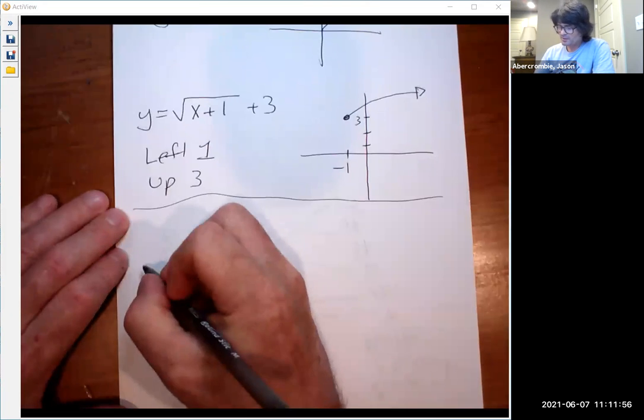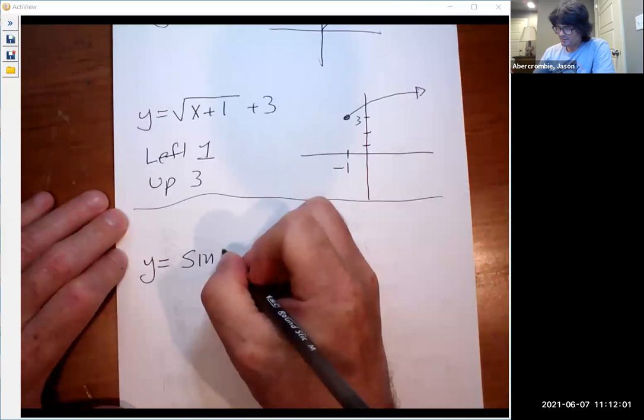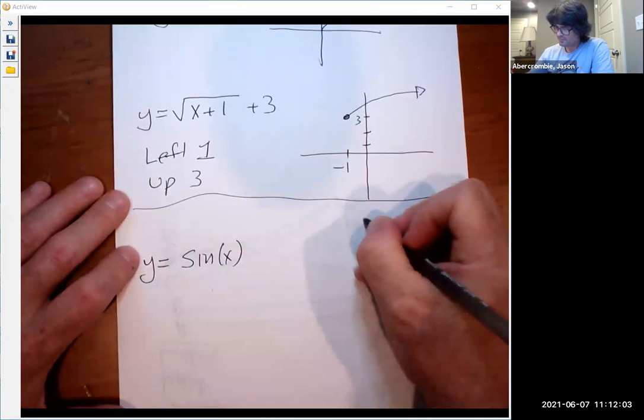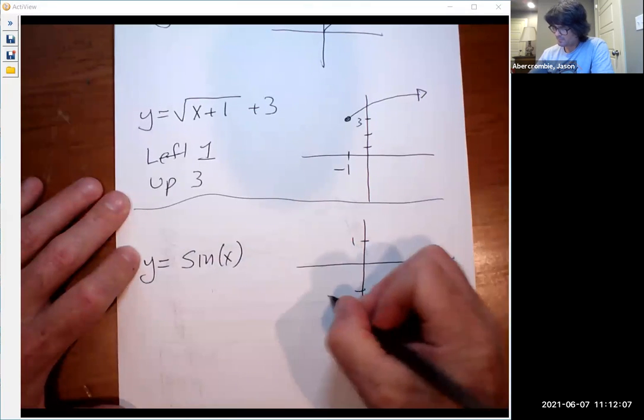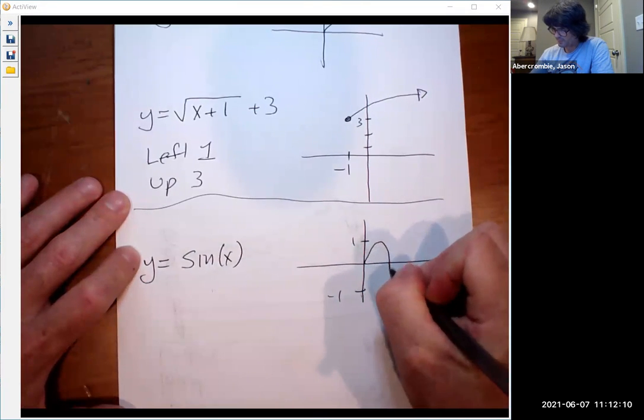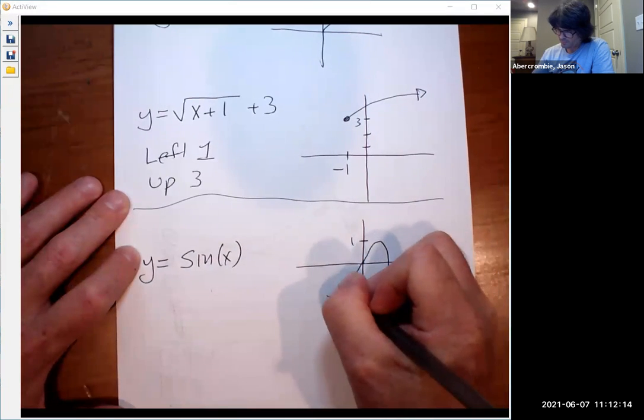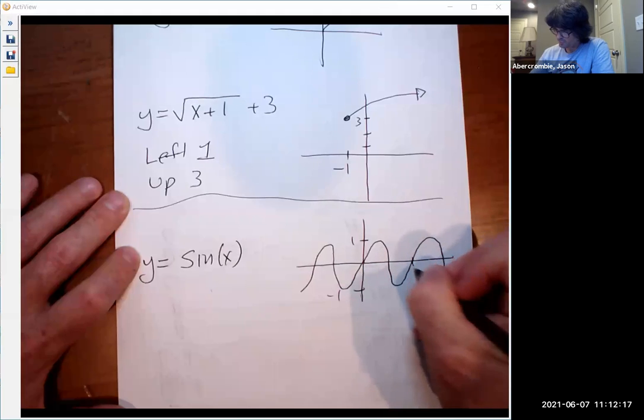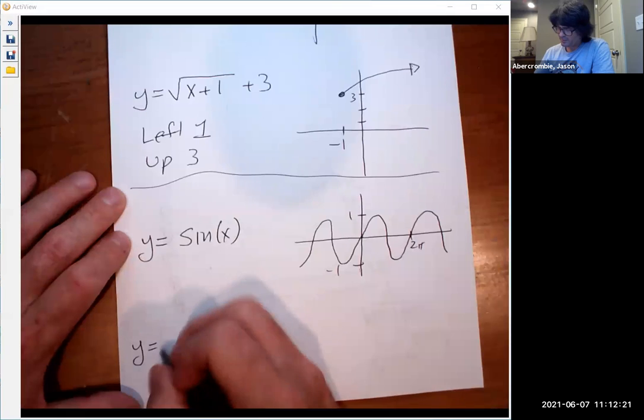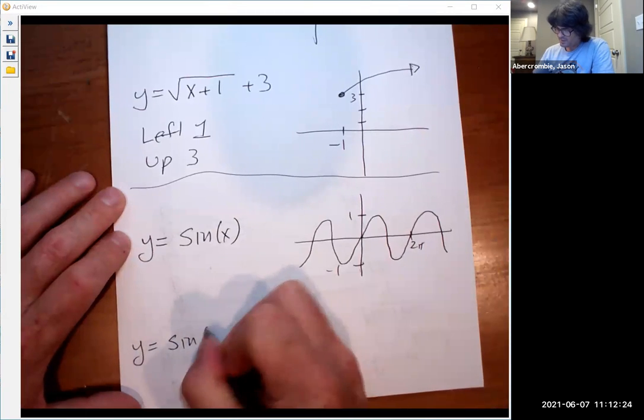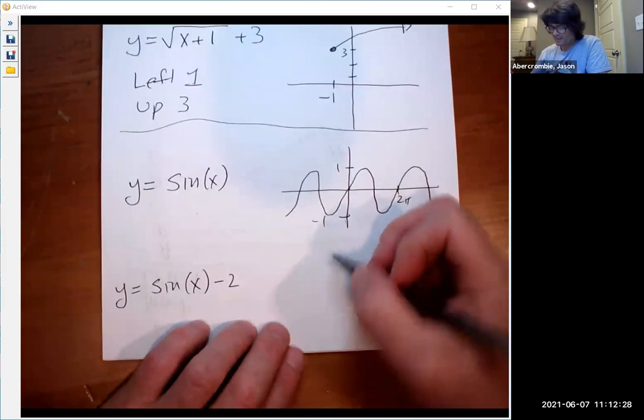Let's do another one. Let's make this interesting. How about sine of x. It's kind of a hard one. Your sine graph kind of looks like this. Roughly, I'm going to just draw a real basic picture of that. Each cycle is 2 pi.